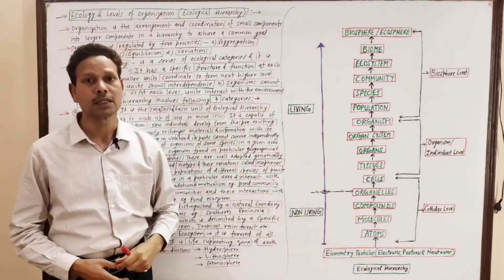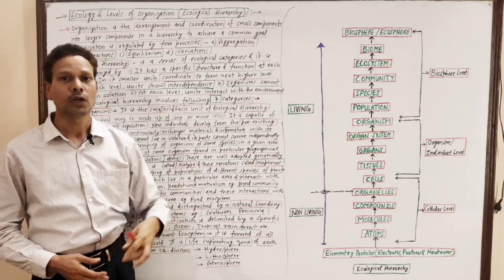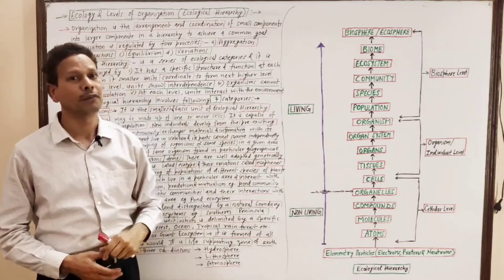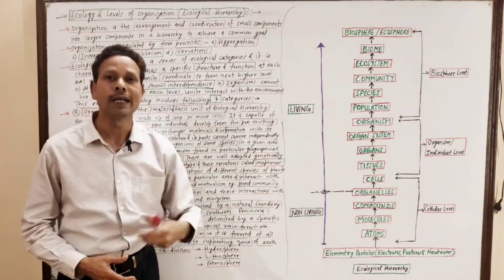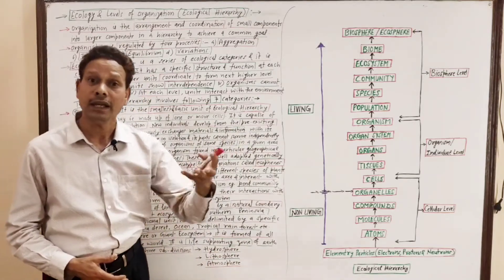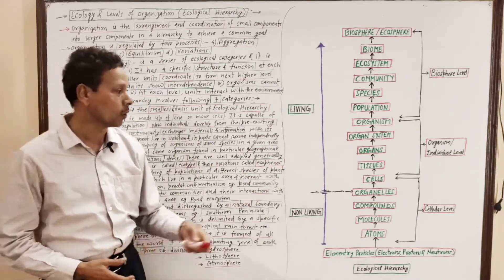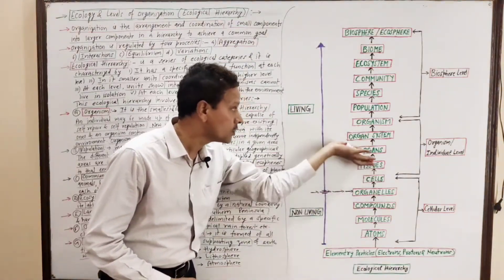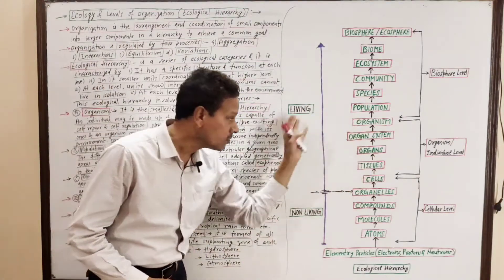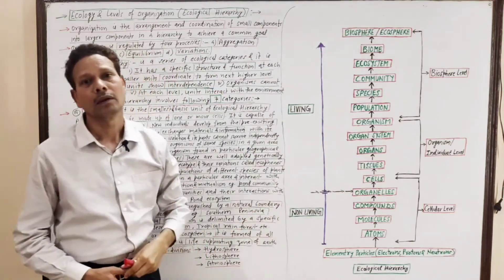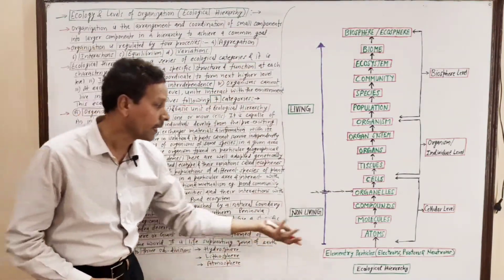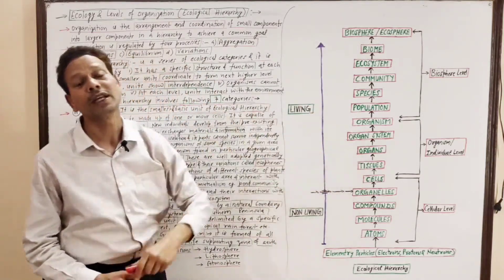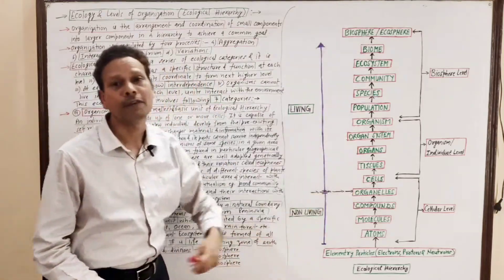In today's lecture we will discuss Levels of Organization. Organization means an arrangement and coordination of small units and small components into larger components in a hierarchy to form a common goal. In this Ecological Hierarchy, smaller units are arranged, coordinating with each other to produce a definite goal — systematically, smaller units into larger, and larger into still larger units.